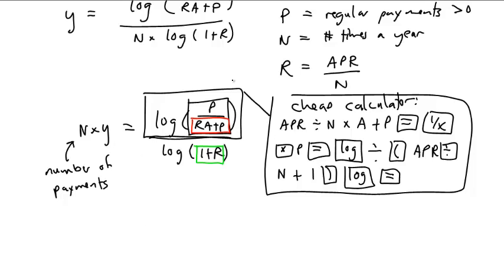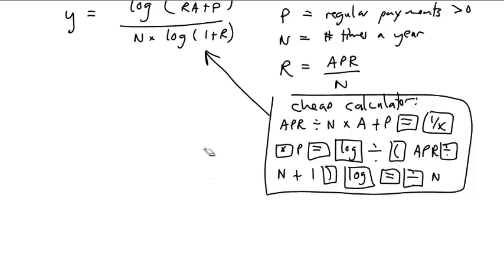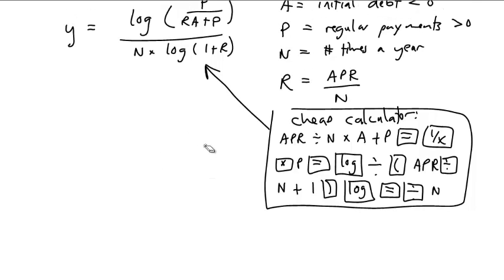I forgot to divide by n. Again, if I'm using this formula, I would then have to do divided by n to get y. If you have an expensive calculator — the kind where when you hit log it shows you 'log' on the screen — the process is a bit different.